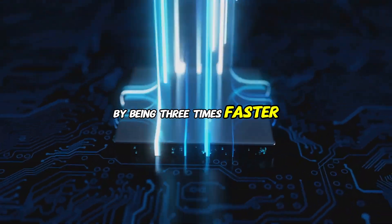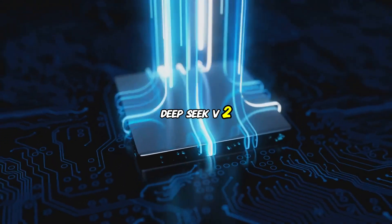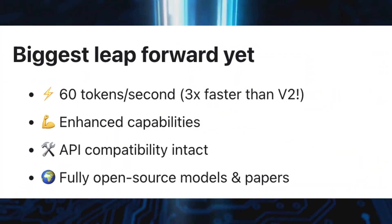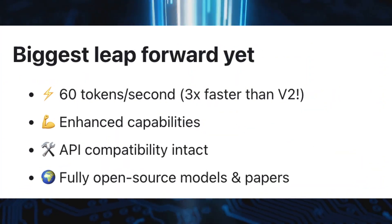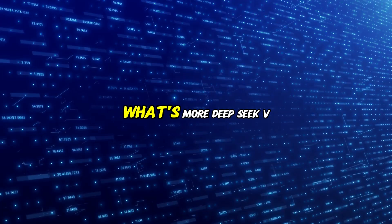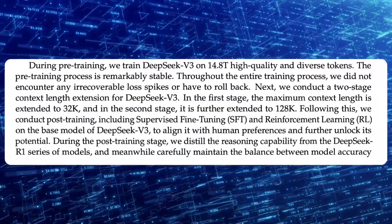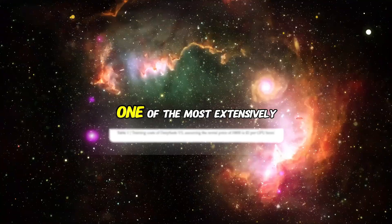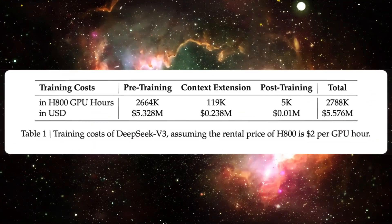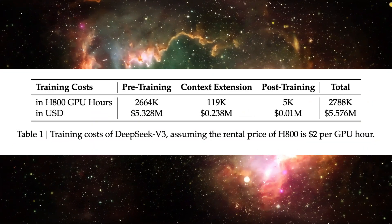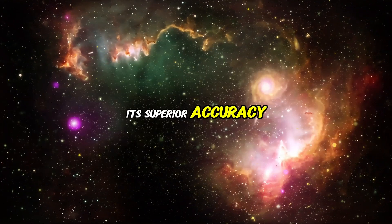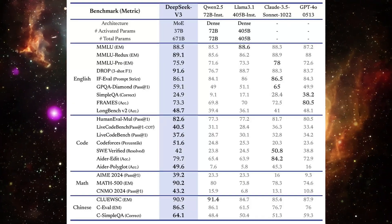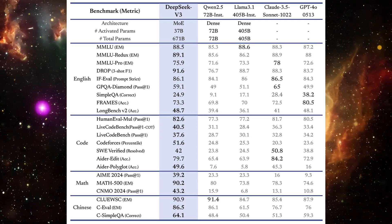By being three times faster than its predecessor, DeepSeek V2, this model operates at 60 tokens per second, setting an unparalleled standard for speed. DeepSeek V3 has been trained on 14.8 trillion high-quality tokens, making it one of the most extensively trained models ever. This training ensures not only its superior accuracy, but also its adaptability across multiple domains, including coding, language understanding, and math.